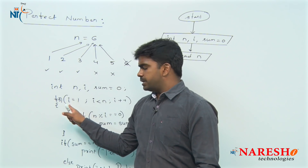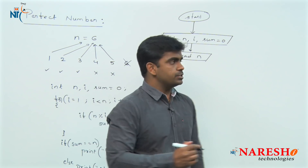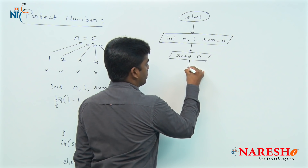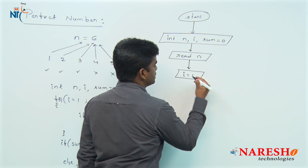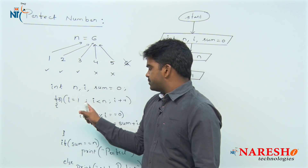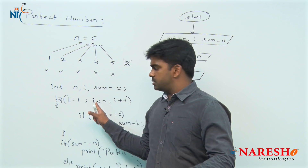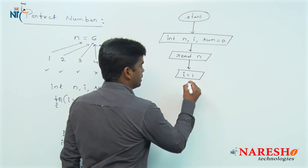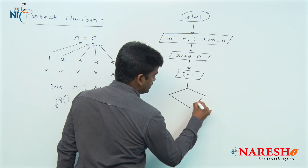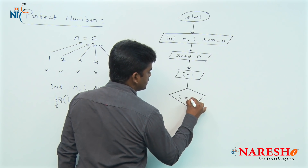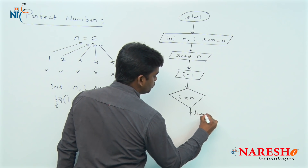Next, we set up the loop: initialization is I equals 1. Then we check the loop condition — I is less than N. This condition has two options: true or false.